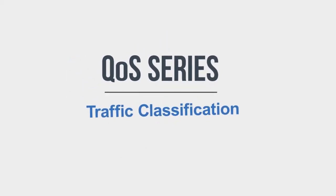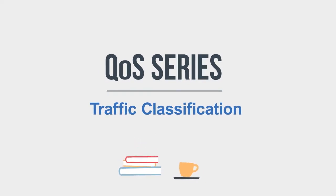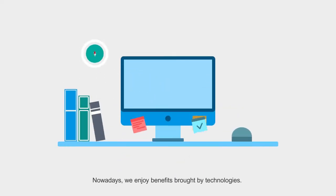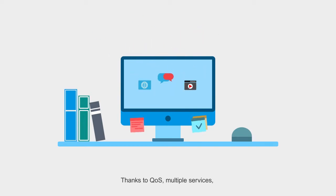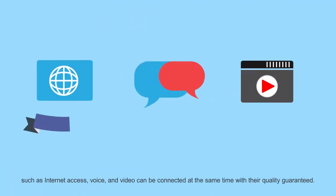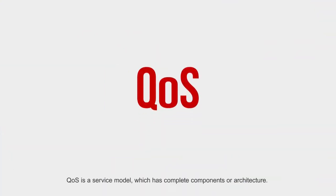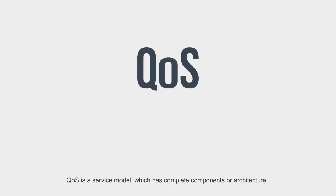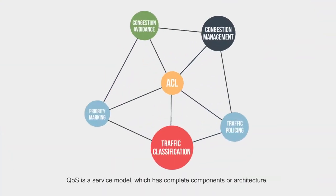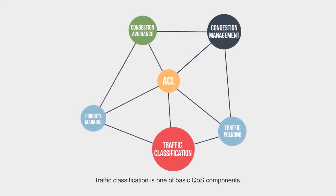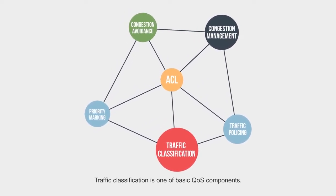Q-Series Traffic Classification. Nowadays, we enjoy benefits brought by technologies. Thanks to QoS, multiple services such as internet access, voice and video can be connected at the same time with their quality guaranteed. QoS is a service model which has complete components or architecture. Traffic classification is one of the basic QoS components.